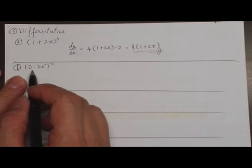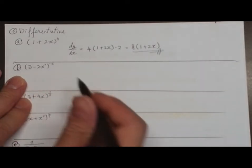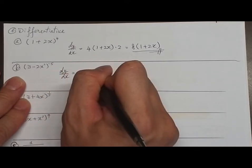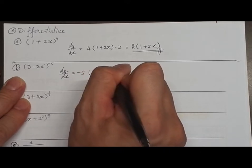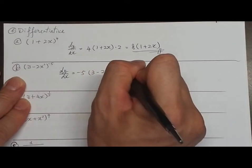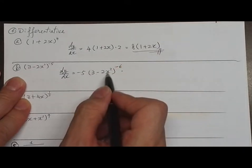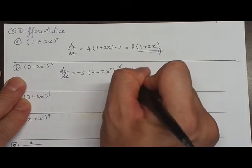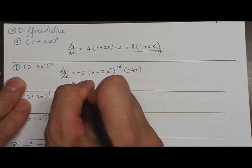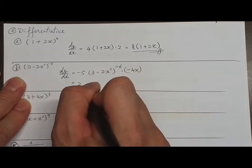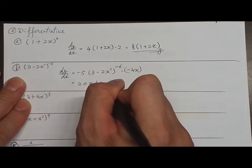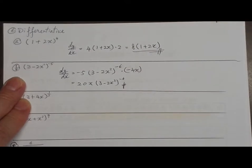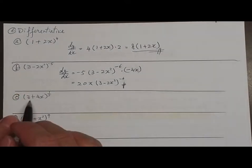Part B: y equals (3 − 2x²)^(−5). dy/dx equals −5 multiplied by (3 − 2x²)^(−6) multiplied by −4x. This gives 20x(3 − 2x²)^(−6). This is the answer.